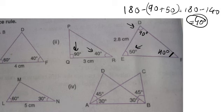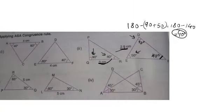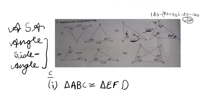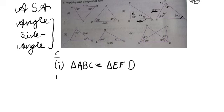Now we come to the sides. Remember: when angles are not given, we have to find them using the angle sum property or other triangle properties. The side is 3 centimeters in one triangle and 2.8 centimeters in the other — the sides are not the same. If any of the three things is not the same, then the triangles are not congruent. So the second sub-part triangle is not congruent.